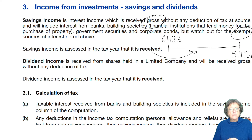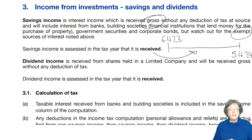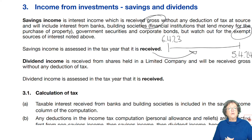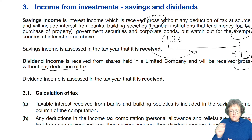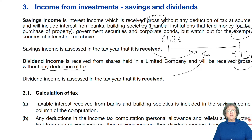Dividend income is income that you receive when you have invested money into a company and received shares. You invest the money, they give you a share certificate, and every so often the company will issue a dividend as a reward — a certain percentage of the value that you hold. That dividend income is received gross without any deduction of tax, and it is what you receive in that tax year between those two dates.